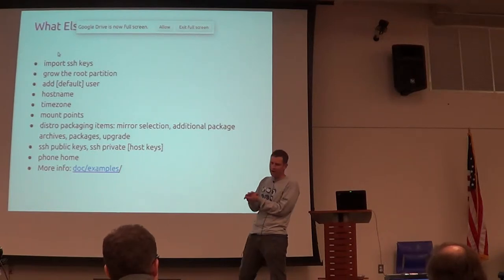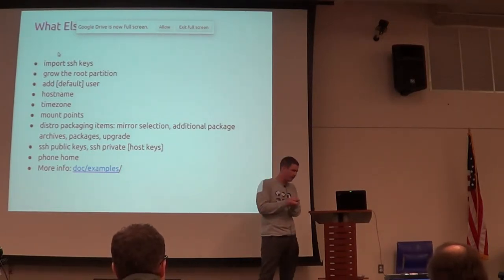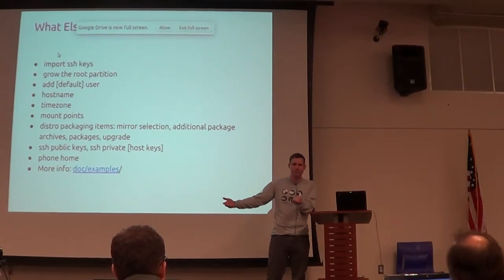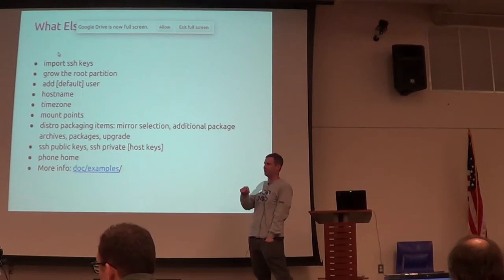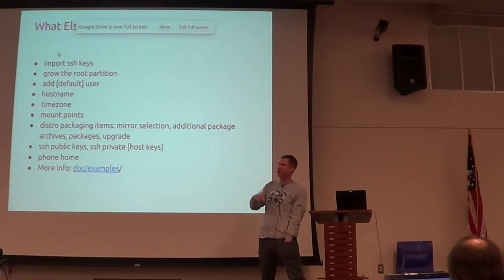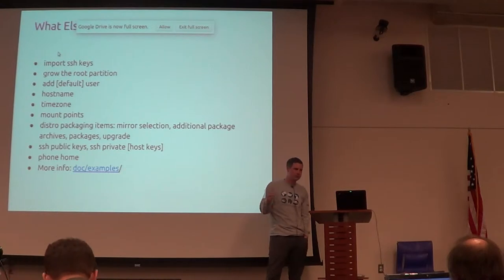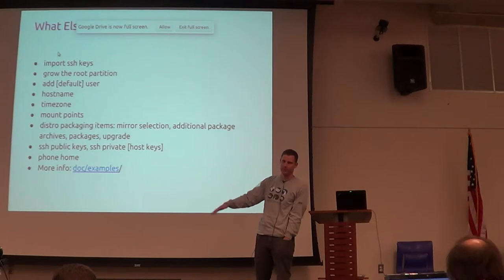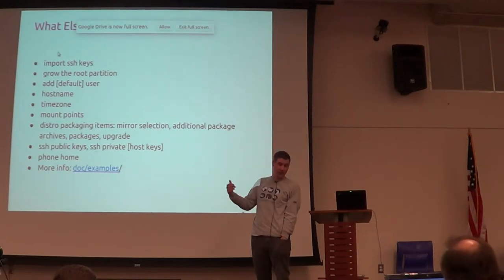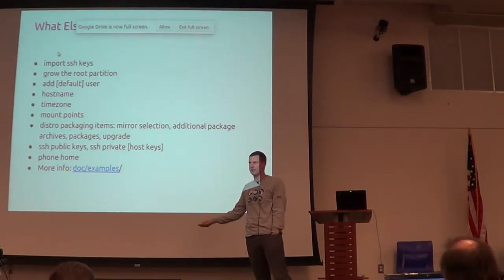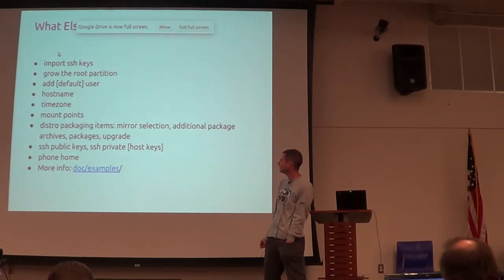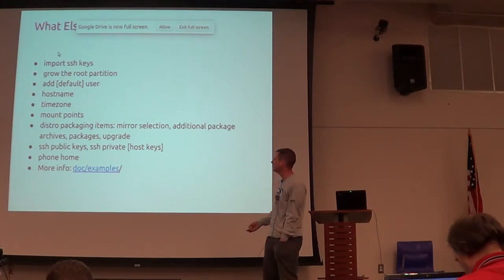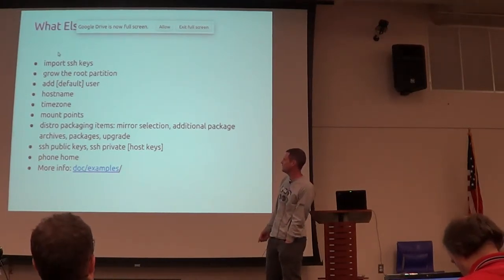CloudInit comes up and says: your partition table is not optimal — your root partition could use all that extra space. So it will rewrite the partition table and then grow the root partition, so that when your code starts executing, instead of having just two gigabytes of space, you'll use the whole disk. You can turn that off now, in case you actually want to do something else with that additional disk space, and you can turn that off via user data. That was a nice feature.